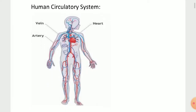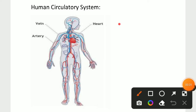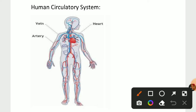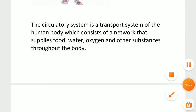First let us see about the human circulatory system. I have given an image here — this is the whole image of the human circulatory system. The parts are labeled: heart is the center part which is dark red in color, veins are in blue color, and arteries that are red in color.